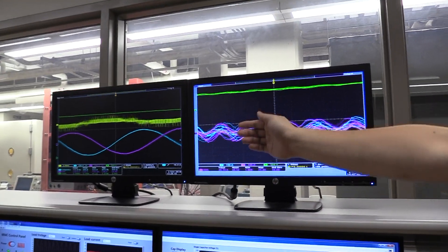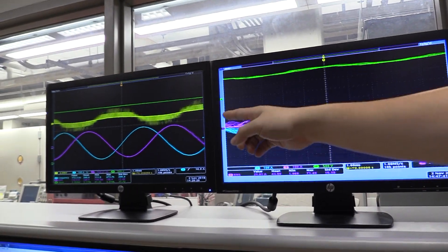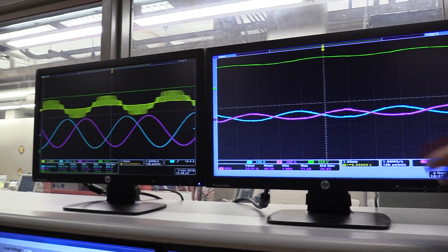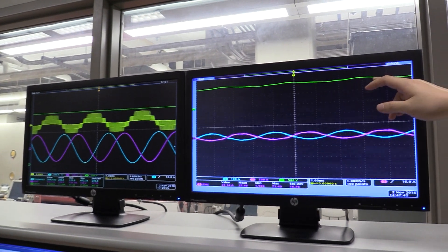So we say frequency increase, we can see the current and the voltage waveform. This is the arm current and this is the capacitor voltage.